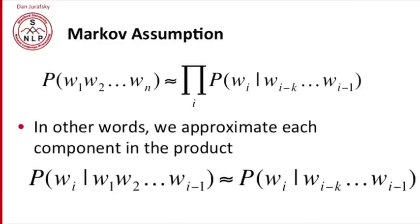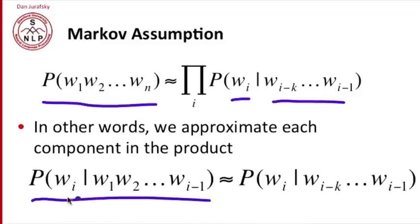More formally, the Markov assumption says the probability of a sequence of words is the product for each word of the conditional probability of that word given some prefix of the last few words. So in other words, in the chain rule product of all the probabilities we're multiplying together, we estimate the probability of wi given the entire prefix from one to i minus one by a simpler to compute probability wi given just the last few words.